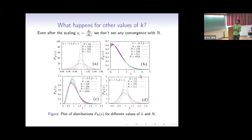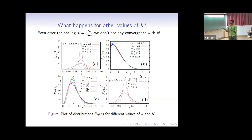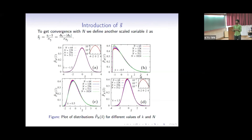For other values of k, even after scaling delta_j by the average delta_j, we do not get any collapse of the distribution function with system size. This deviation actually increases with N. So to get an N-independent distribution, we define the quantity S_j tilde, which is the gap minus its average value divided by its standard deviation. Looking at the spacing distribution P tilde in terms of this rescaled variable, we get a system-size-independent spacing distribution for k greater than 0, but not for k between minus 1 and 0.